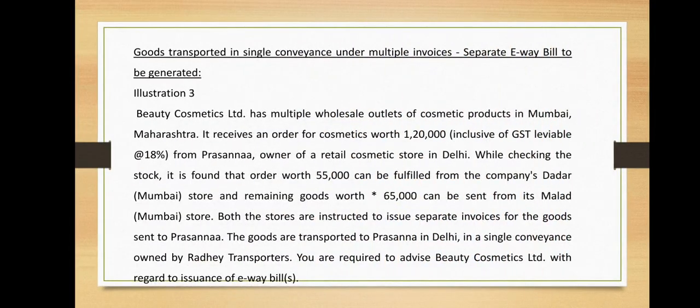The next illustration covers goods transported in a single conveyance under multiple invoices. Beauty Cosmetics Limited has multiple wholesale outlets of cosmetic products in Mumbai. It receives an order for cosmetics worth rupees 1,20,000 inclusive of GST at 18% from Prasanna, owner of a retail cosmetic store in Delhi. Goods worth rupees 55,000 can be fulfilled from one Mumbai store and the remaining rupees 65,000 from another Mumbai store. Both stores are instructed to issue separate invoices for the goods sent to Prasanna.